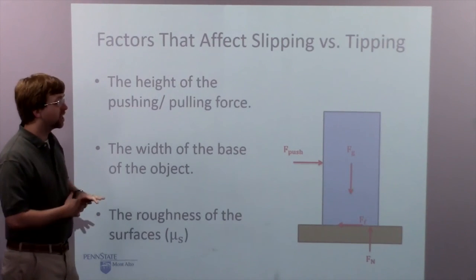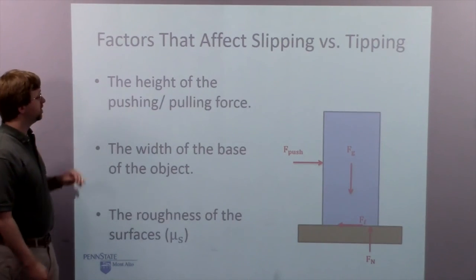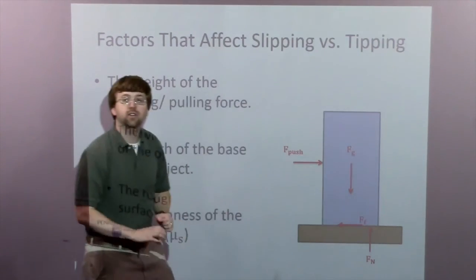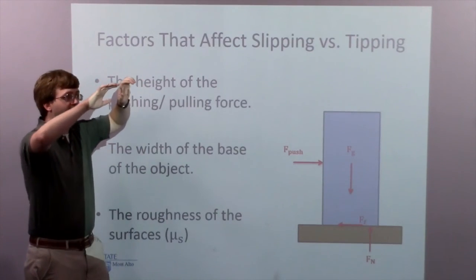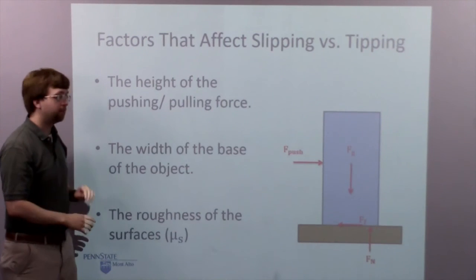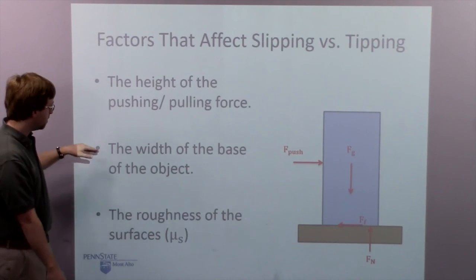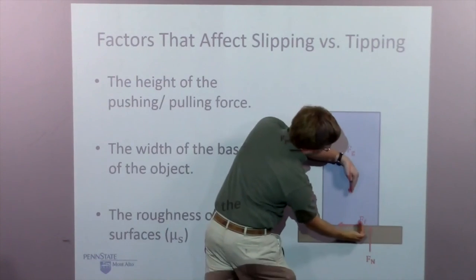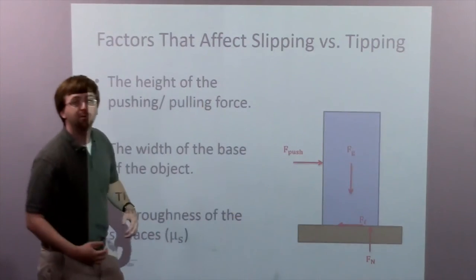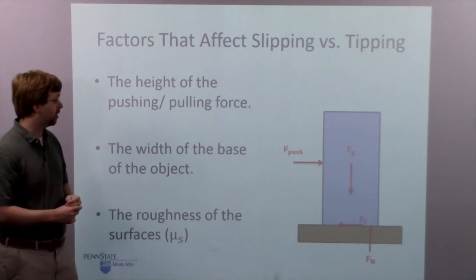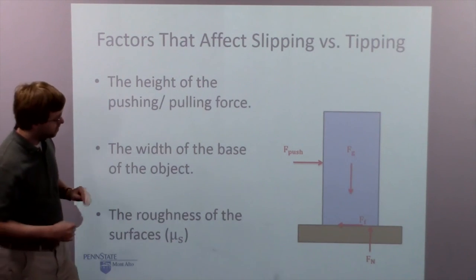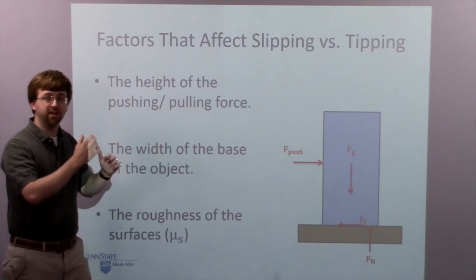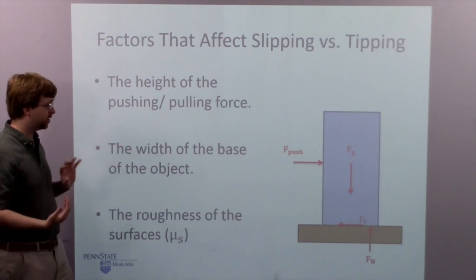Some of the factors that affect slipping versus tipping: The height of the pushing or pulling force — the higher my pushing force, the greater this distance and the greater the couple becomes. So if I push higher on an object, like imagining pushing on the top of the fridge, it's more likely to tip. If I push on the bottom of the fridge, it's more likely to slide. The width of the base of the object — the bigger the width, the more separation I can get, the further my normal force can slide over, and the more stable an object becomes, so the harder it becomes to tip over. And finally, the roughness of the surface is going to limit how much pushing force I need to slide. So something on a very smooth surface is going to tend to slide, while something on a very rough surface is going to tend to tip over.